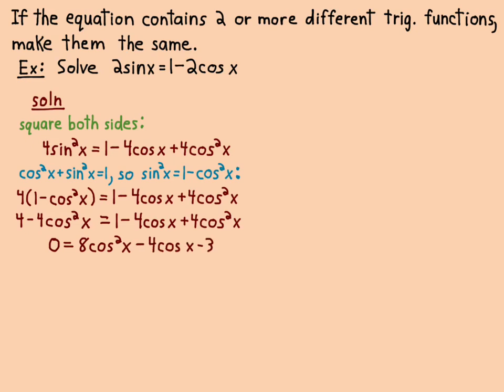When I put those terms on the right side, I get 0 = 8cos²x - 4cos x - 3. I wrote them in descending powers of cosine. That's a quadratic in cosine. I tried to factor it, but it didn't factor, so I used the quadratic formula. This is where it's important that you have a habit of writing 'cos x =' instead of just leaving it blank. You're finding cosine of x, not x.